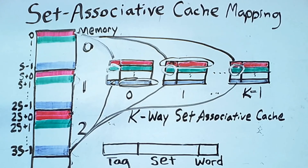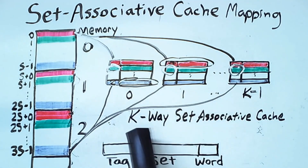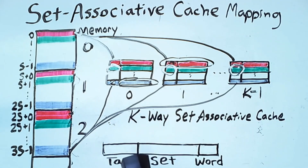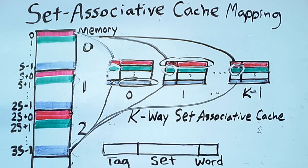This k-way approach is generally only sensible if the value of k is small. Keep in mind that k is the number of different locations that any given memory address can potentially map to. If you want each individual memory address to have more available locations it can map to, then the approach using several distinct content addressable memories is preferred.